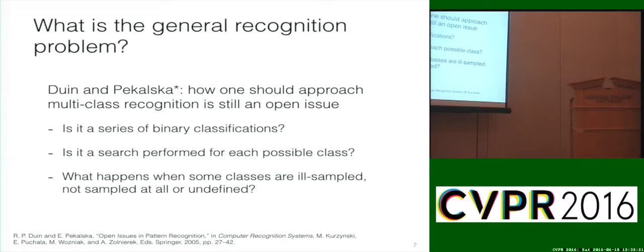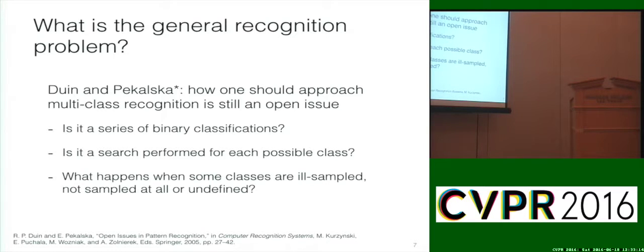What do we do for multi-class recognition in an open setting? What is recognition in general — do we have a good handle on that? There are a lot of different opinions people argue about. Is it really a series of binary classifications? We typically build ensembles of binary classifiers. Maybe it's really a search performed for each possible class. The open set problem crops back in: what if some of those classes are ill-sampled, not sampled at all, or simply undefined? Pattern recognition has posed a lot of good questions, but there's no definitive answer.